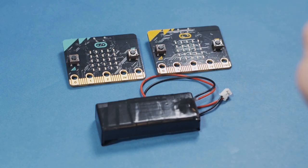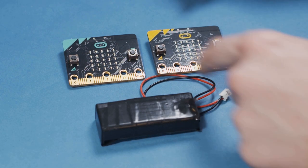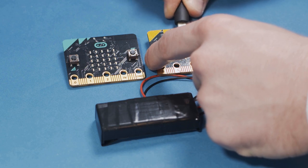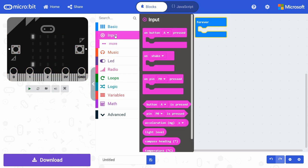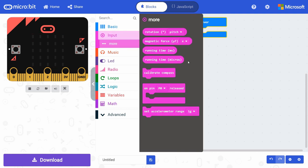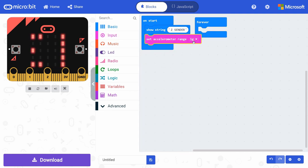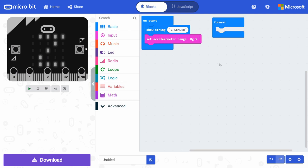To measure acceleration, we'll need two micro bits and a battery pack. Plug the first micro bit into your computer. In a new MakeCode project, get a show string block from basic and snap it under on start. Change the string to sender to let us know that this is the transmitter. Click on input and more to get a set accelerometer range block and snap it under show string. Change the range to 8g, which is the maximum that the micro bit can detect.